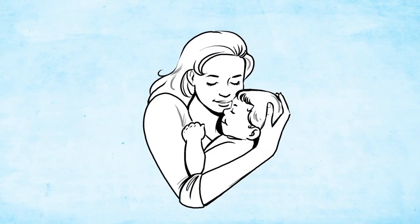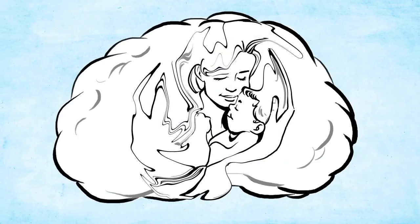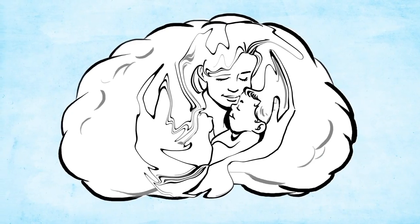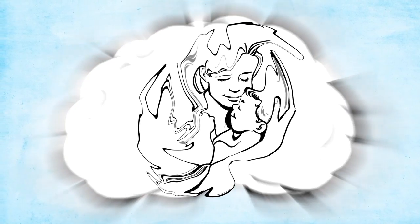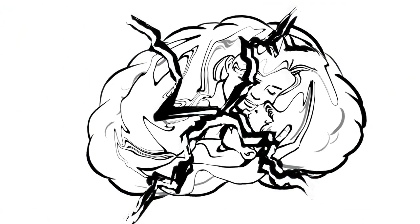So, when children experience stable, nurturing relationships, it fosters the development of healthy circuitry. And when children experience uncertainty or instability, it literally disrupts the circuitry and the brain's architecture as it's being built.